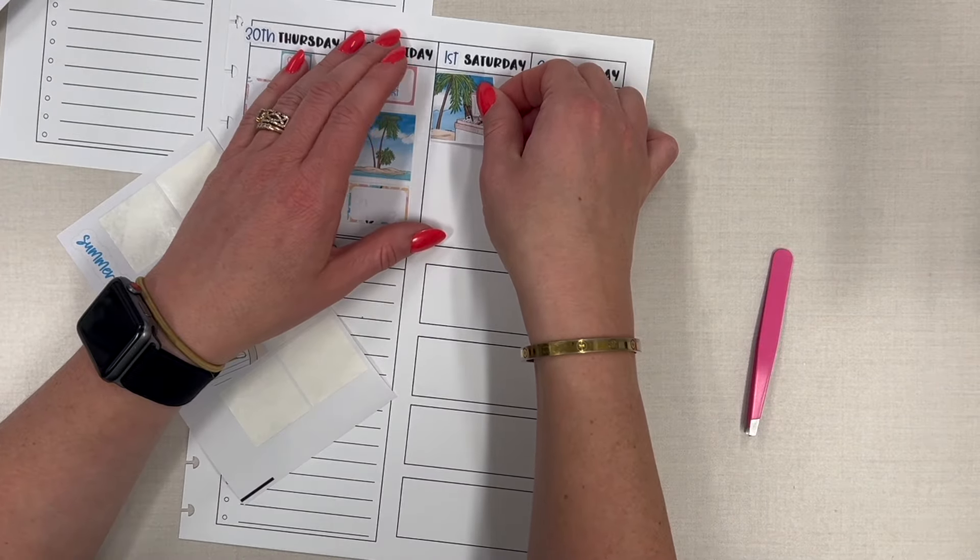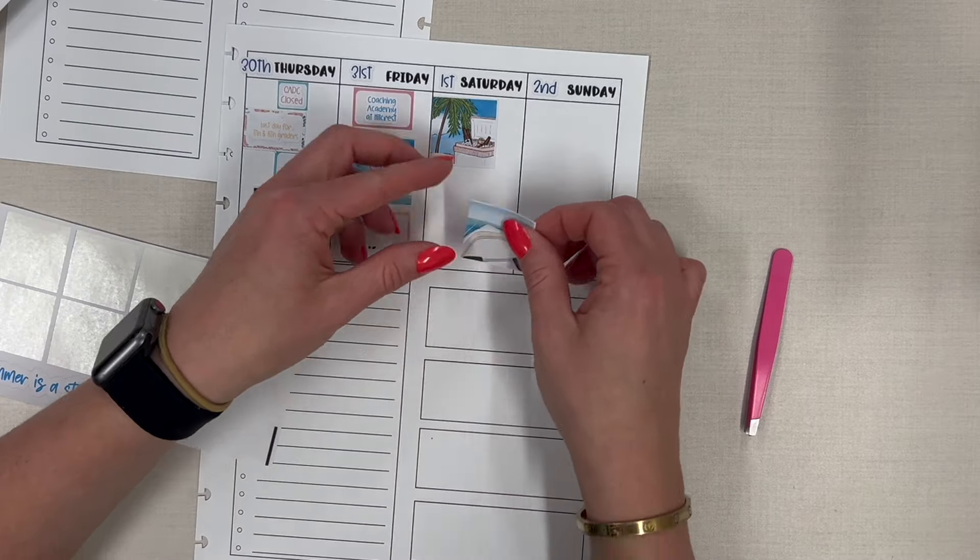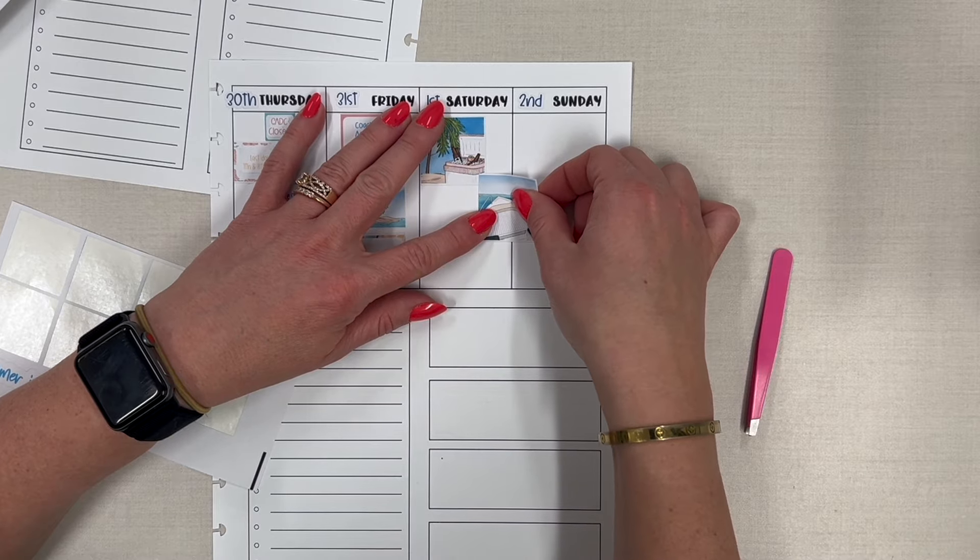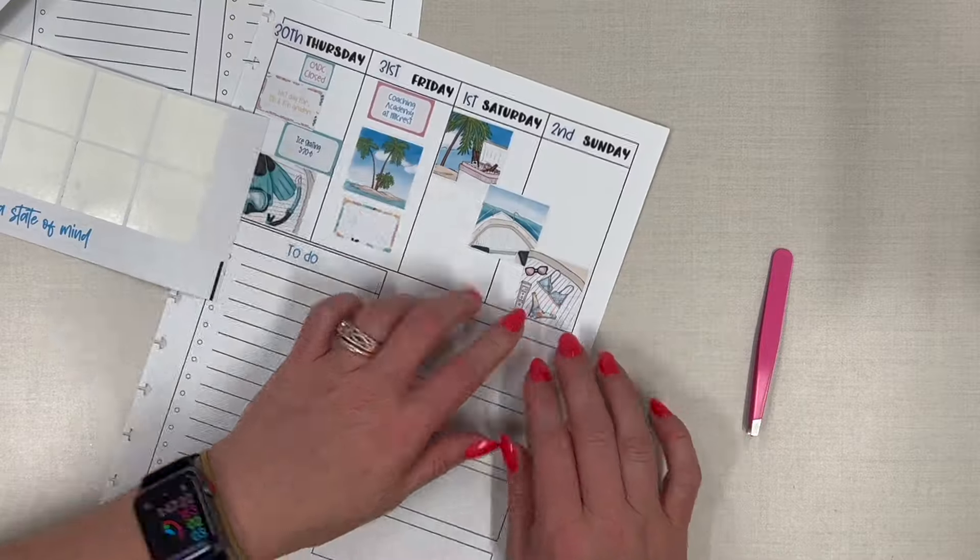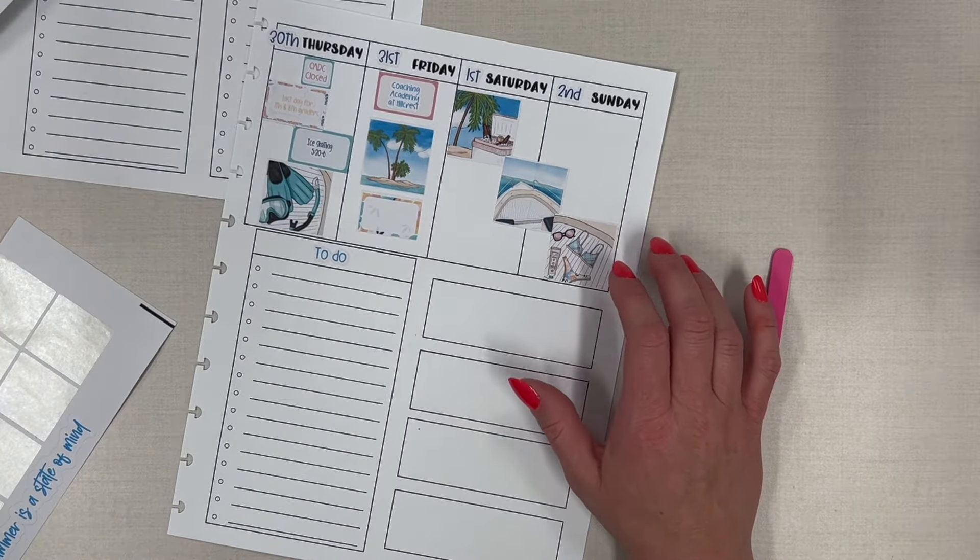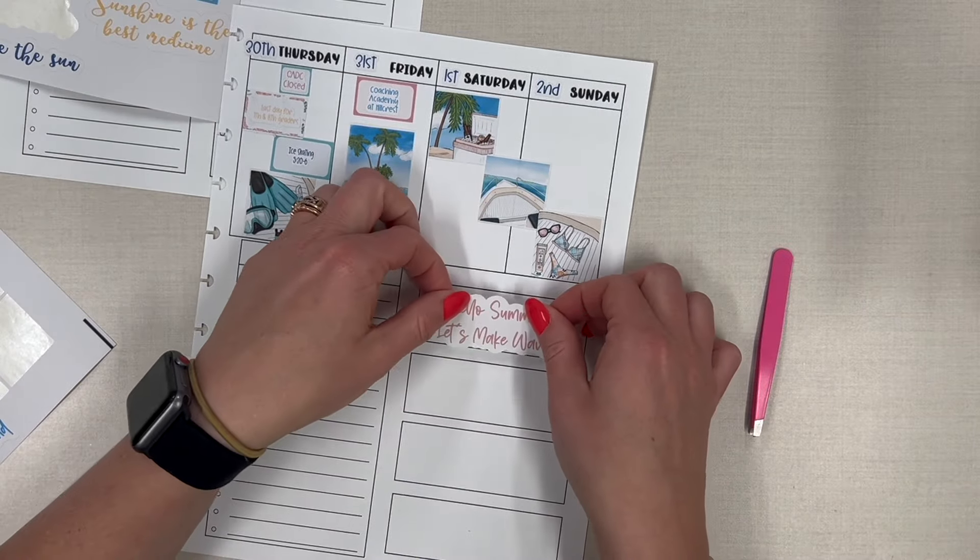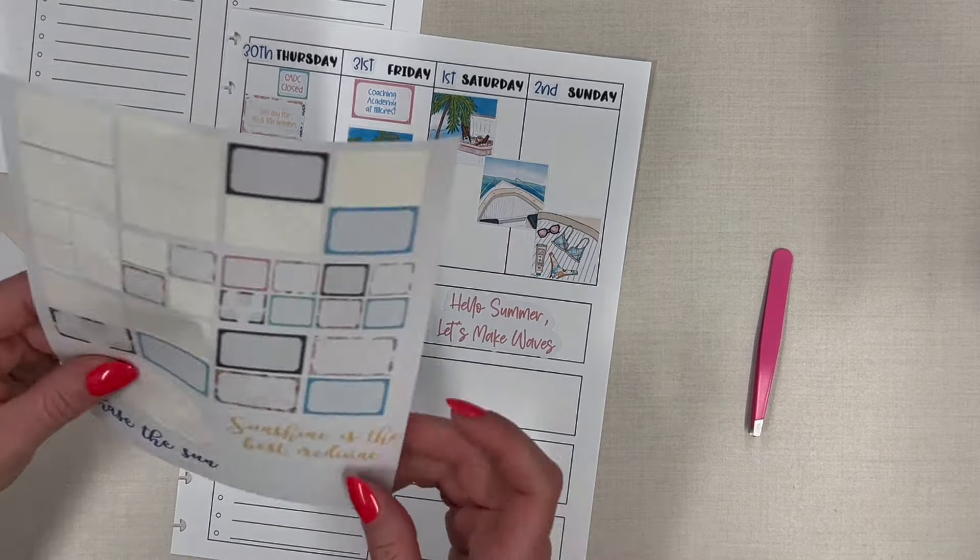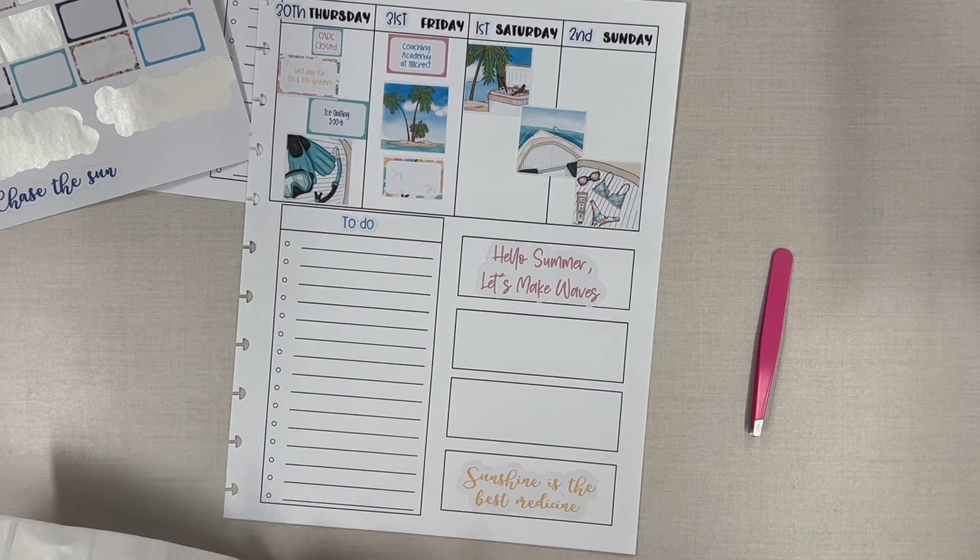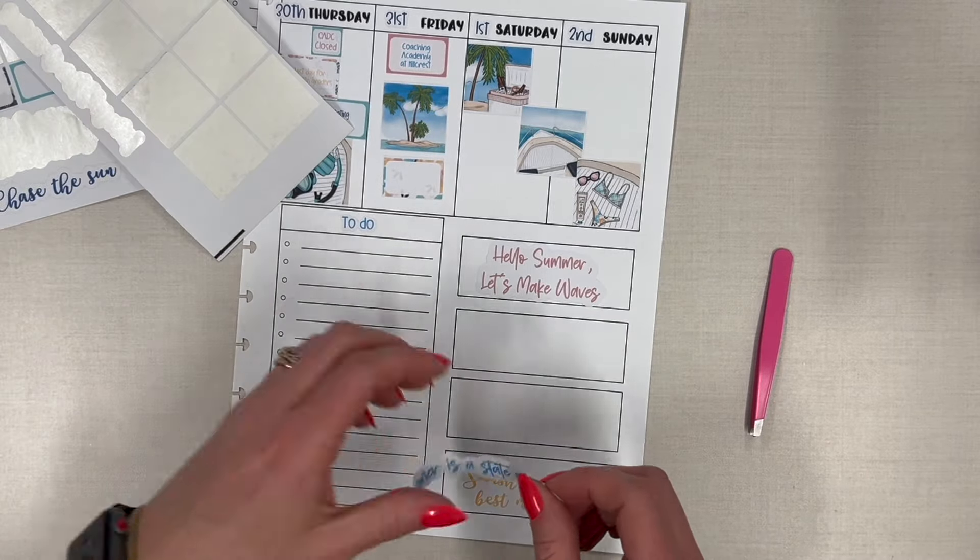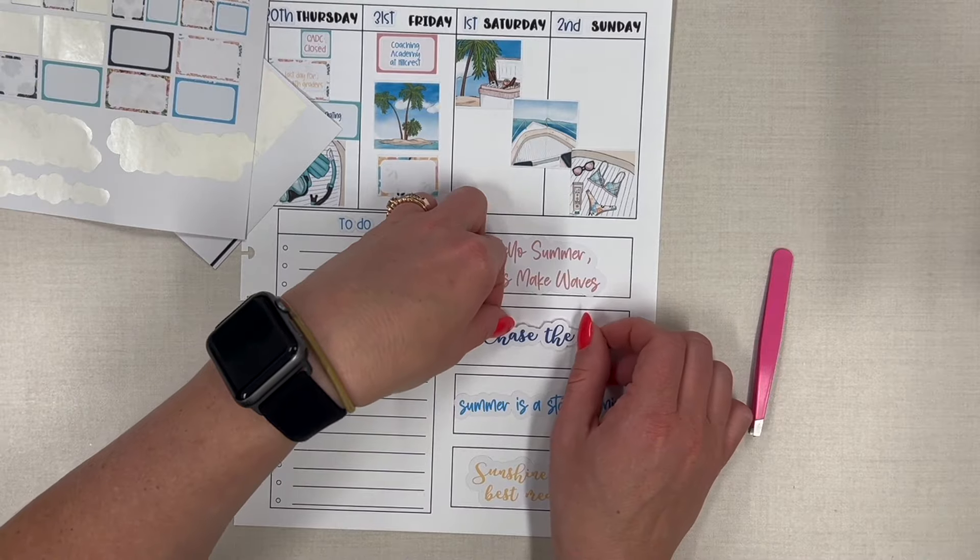Then Saturday and Sunday we have nothing going on so I'll do these palm tree with the beers in the cooler, I'll do the boat, we'll do a little bit of a collage and then on the boat deck we've got the swimsuit and the sunglasses, cute. Let's put down the quotes that I made. Hello summer, let's make waves, there's one. Let's see, sunshine is the best medicine, put that one down here. And then summer is a state of mind, I will put that just above it. Normally I do my quotes on clear but I just was okay with paper this week. And then chase the sun.